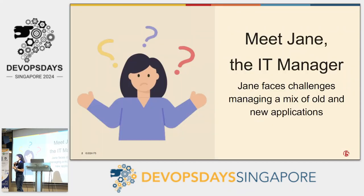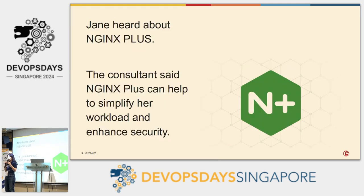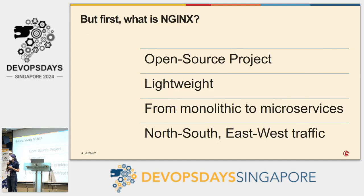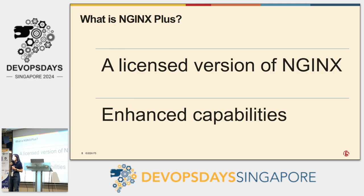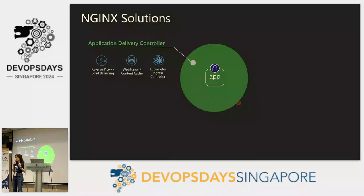Hi everyone, I'm the modern app specialist from F5. I love storytelling, so today I'm going to tell you a story about James, an IT manager for applications. Every day she struggles between managing legacy systems and modern apps, which keeps her constantly on her toes. She heard about NGINX Plus — a consultant told her it could help simplify her workload and enhance security. So what is NGINX? It's a lightweight proxy technology — an all-in-one tool that can help you manage different aspects of your DevOps cycle.